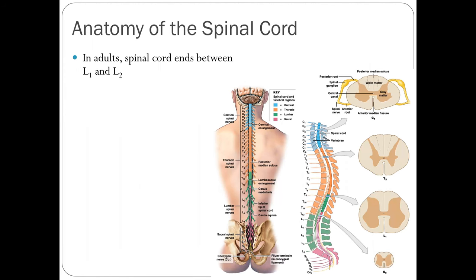The spinal cord does not run the entire length of the spinal column. In fact, the spinal cord actually ends between the L1 and L2 vertebrae — lumbar 1 and lumbar 2. Below that, we have descending roots, which we'll discuss in a moment, but the spinal cord itself ends between L1 and L2.